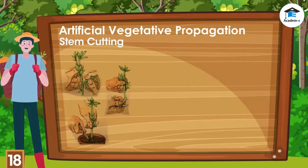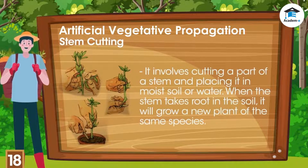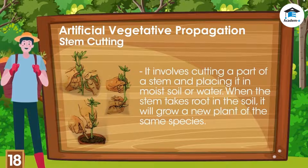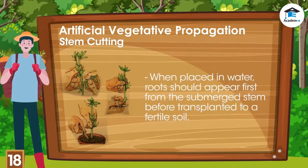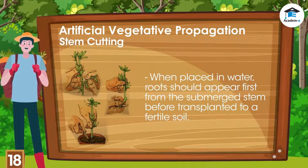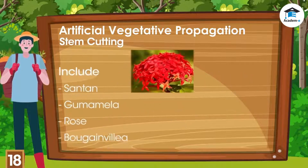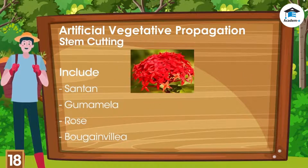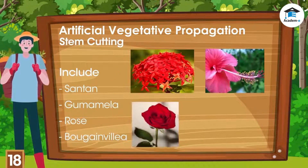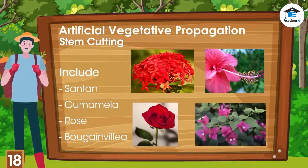Stem cutting involves cutting a part of a stem and placing it in moist soil or water. When the stem takes root in the soil, it will grow a new plant of the same species. When placed in water, roots should appear first from the submerged stem before being transplanted to fertile soil. Examples of these plants are santan, gumamela, rose, and bougainvillea.